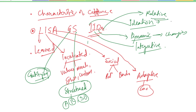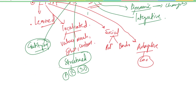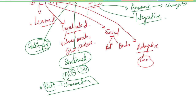So to recap, we first talked about the definition of culture given by E.B. Tyler, and then we moved on to the characteristics using our mnemonic. I hope this was a fine lecture. Thank you, and stay tuned for the next one.